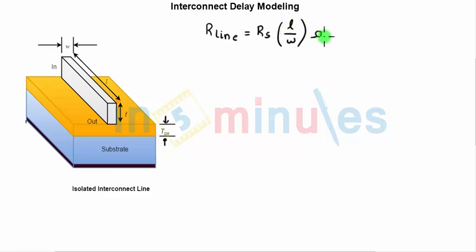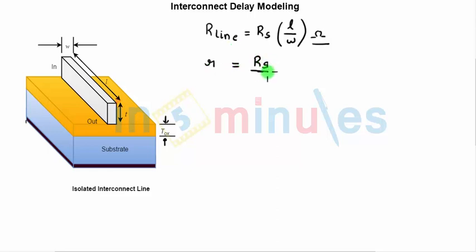The unit of R_line is ohms, because length and width both have units of meters or centimeters which cancel out, and sheet resistance has a unit of ohms. So R_line is equal to sheet resistance into L/W, where L/W is the number of squares with dimension W by W. Now we define the resistance per unit length: small r = R_S / W, with units of ohms per centimeter.